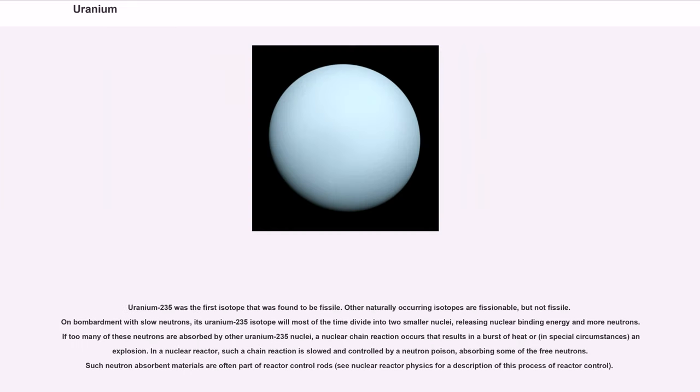Uranium-235 was the first isotope that was found to be fissile. On bombardment with slow neutrons, its uranium-235 isotope will most of the time divide into two smaller nuclei, releasing nuclear binding energy and more neutrons. If too many of these neutrons are absorbed by other uranium-235 nuclei, a nuclear chain reaction occurs that results in a burst of heat or, in special circumstances, an explosion.